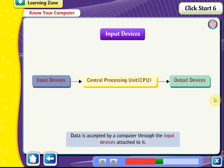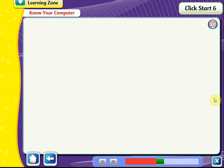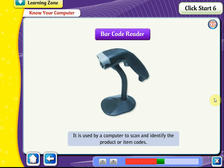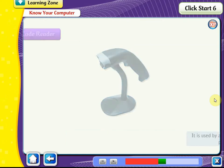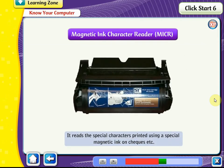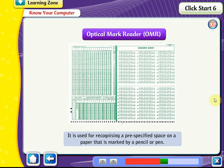Input Devices: Data is accepted by a computer through the input devices attached to it. A barcode reader is used to scan and identify product or item codes in supermarkets, bookstores, and many other places. A magnetic ink character reader (MICR) reads special characters printed using magnetic ink on checks. An optical mark reader (OMR) recognizes a pre-specified space on paper marked by a pencil or pen, and is used for checking answers on examination sheets.